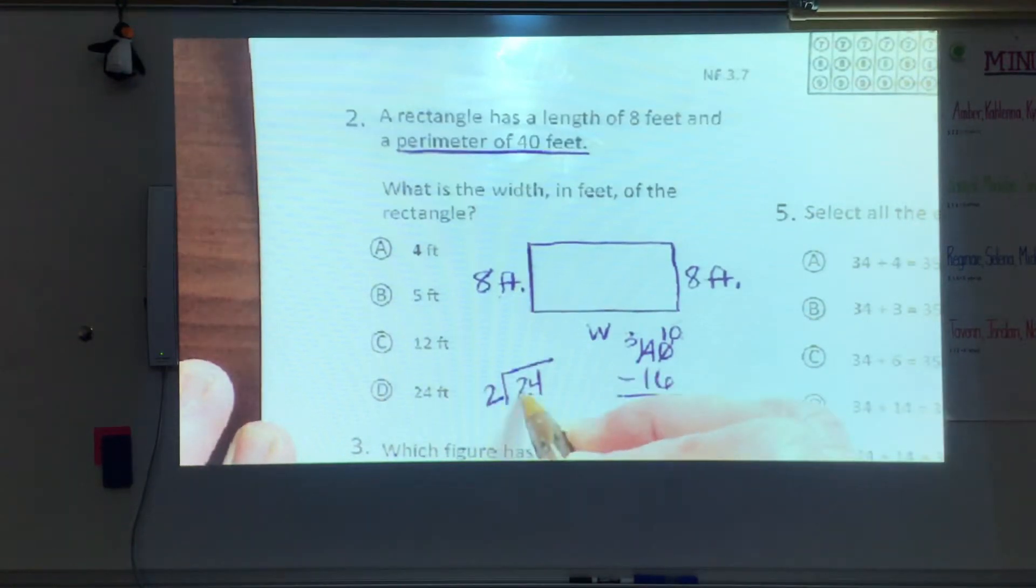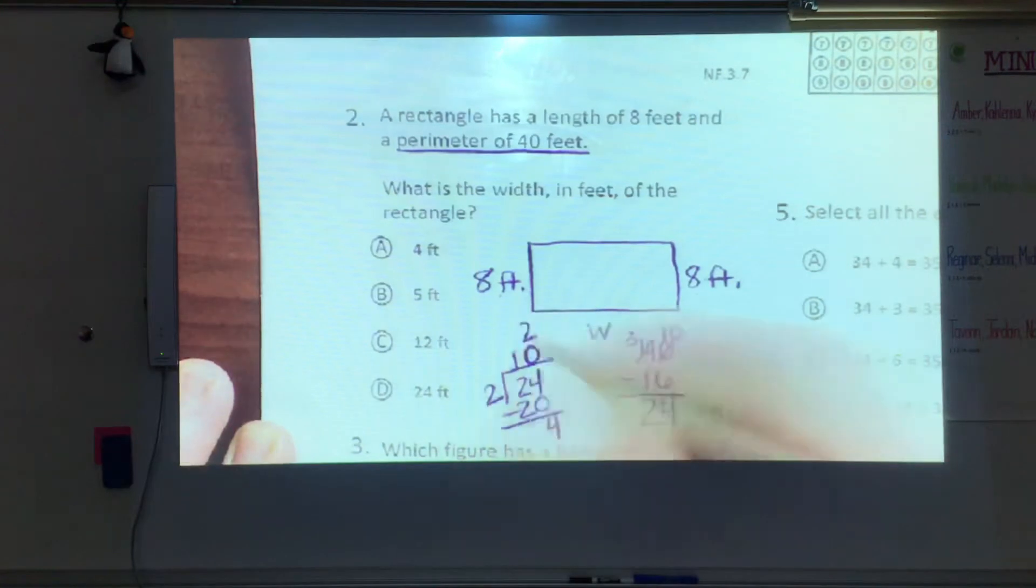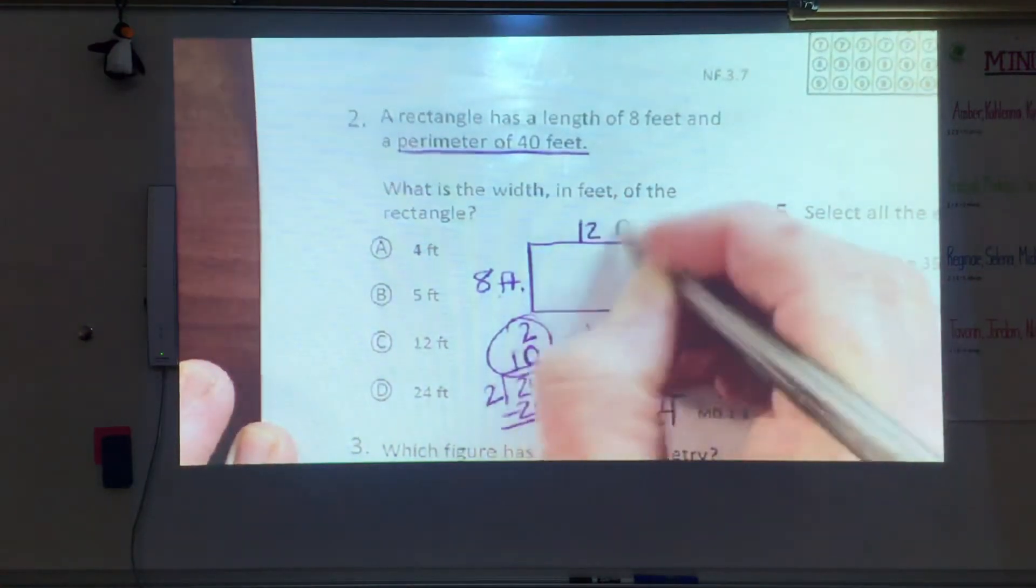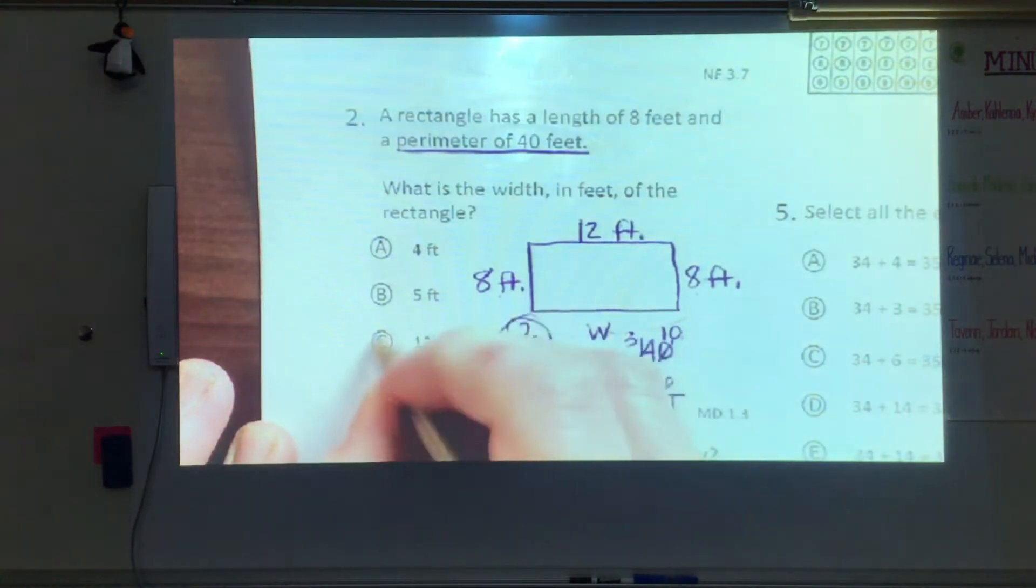2 goes into 2, or 2 times 10. We'll do it partial quotients. 2 times 10 is 20. We're left with 4 and 2 times 2 is 4. So it's a total of 12 feet there and on this side. So C would be the correct answer there.